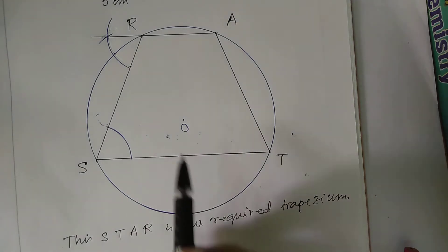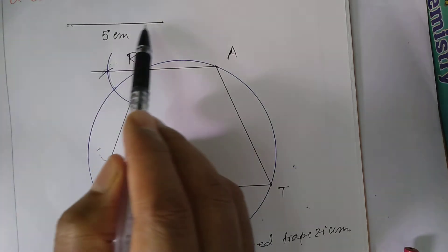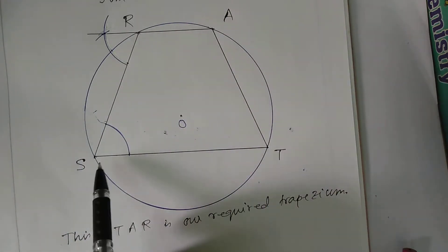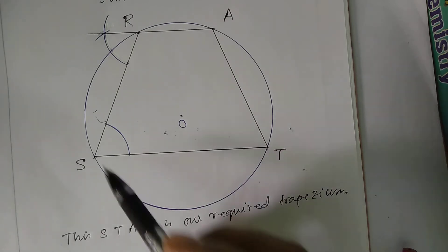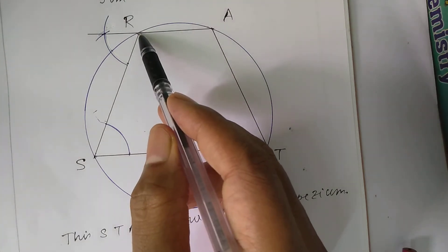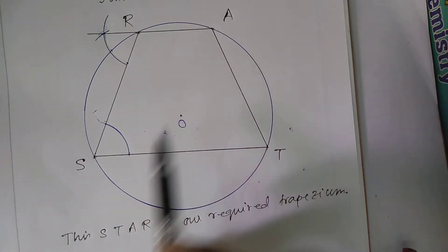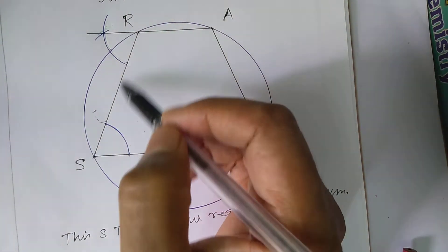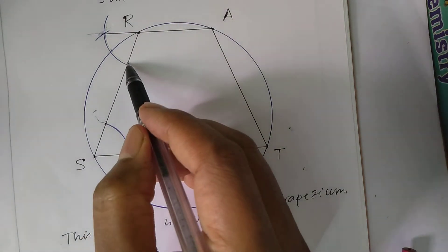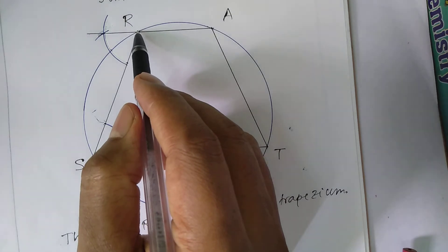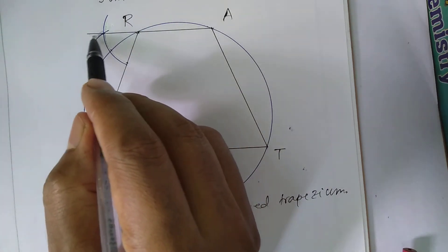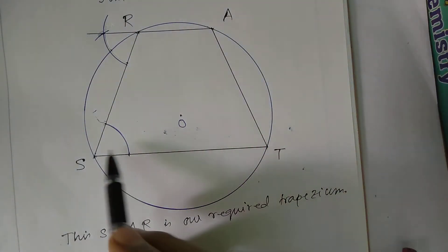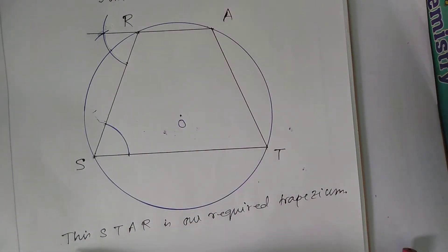Now repeat. At first, we take a line segment of length 5 cm. We draw a circle with center O with radius 5 cm. Take any chord named ST. Then we draw another chord SR. We have to draw a parallel line of ST through R. For this, we measure this angle and draw on SR and cut this amount. And then join R and this cut point and produce which intersects the circle at point A. And then join TA. And this STAR is our required trapezium.